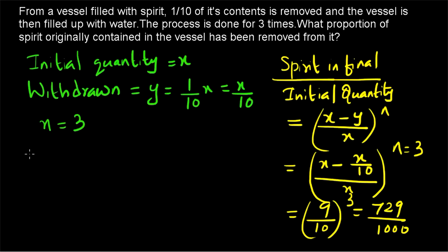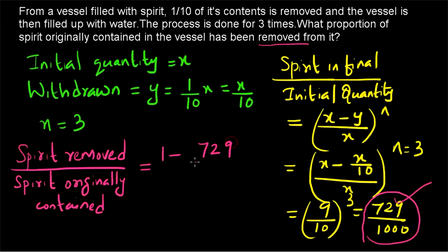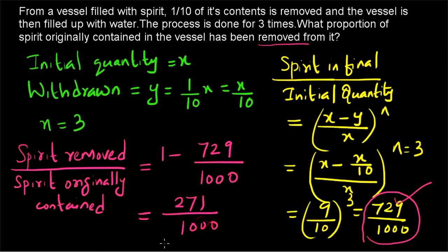The question asks what proportion of the spirit has been removed. We found 729 by 1000 is the proportion still present. So the proportion removed is 1 minus 729 by 1000, which equals (1000 minus 729) by 1000, equal to 271 by 1000. That's our final answer. Thank you for watching.